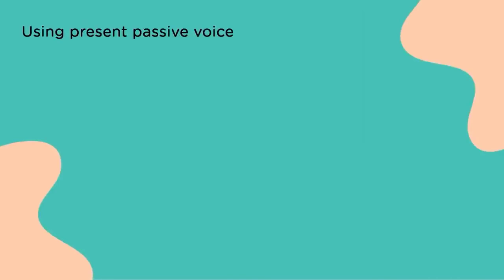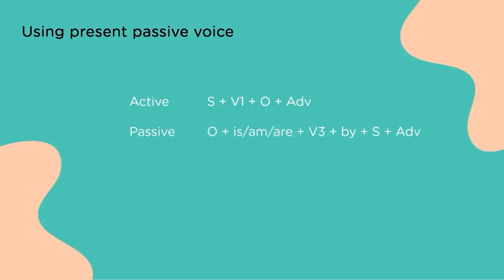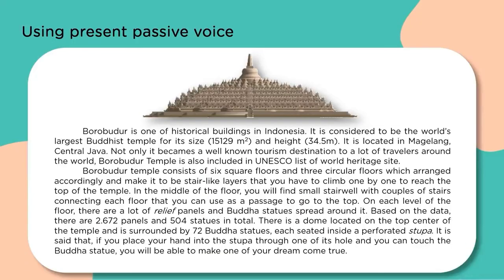Next, using present passive voice. Active form: Subject + Verb 1 + Object + Adverb. Passive form: Object + is/am/are + Verb 3 + by + Subject + Adverb. Example: 'It is considered...' and 'Borobudur temple is also included...'